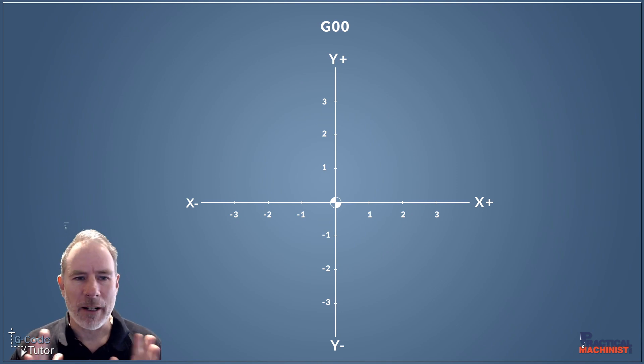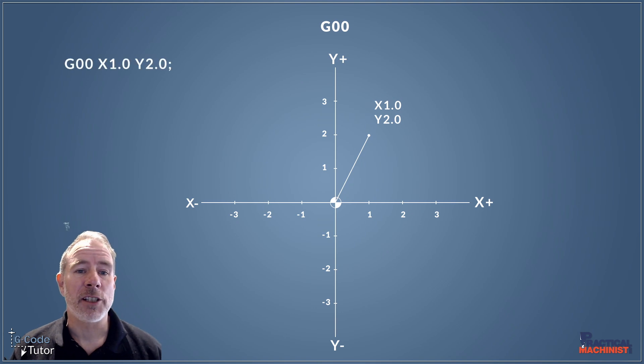So we're going to look at how we program this in absolute, and I'll explain more about absolute and incremental after this section. So we're going to start off by plotting our first point, and our first point is X1Y2. So that's one unit up in X, and two units up in Y. So this would give us this position on our chart. Okay, so to write that in G-code, we would write G00, our rapid travel command, X1 and Y2.